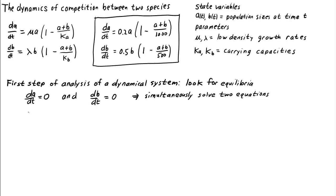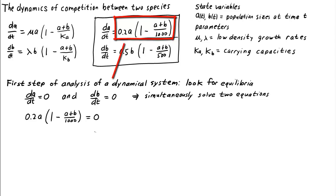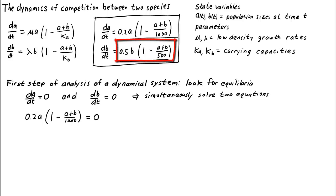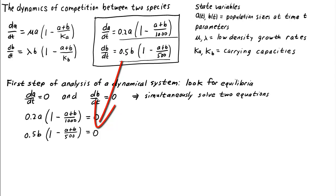The first equation is dA/dt equals zero. This means we have to set the right-hand side, 0.2A times the quantity (1 minus (A plus B) over 1000), equal to zero. The second equation is dB/dt equals zero. This means that 0.5B times the quantity (1 minus (A plus B) over 500) must be equal to zero. To find the equilibria, we must simultaneously solve this system of two equations.